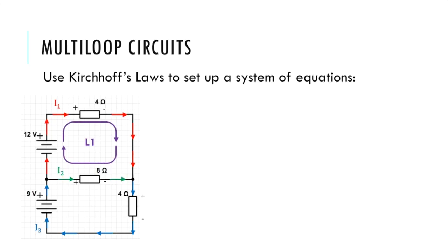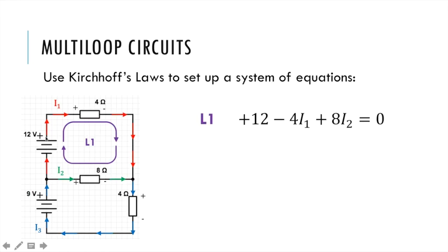Next we choose a loop to go through in the circuit and we're choosing to go through the top half of the circuit clockwise and we'll see what we get when we do the voltage law. We'll start the equation down here in the bottom left corner. Remember when you're solving these yourself it doesn't matter where you start and what direction you go as long as you have one closed loop. As we move through the battery, that's our first component, we go from the negative side to the positive side so that's a gain of 12. So we have a positive 12 to begin.